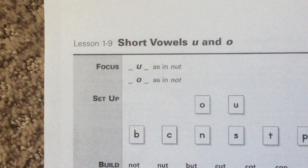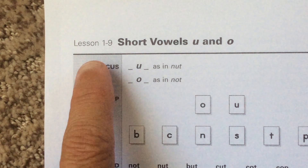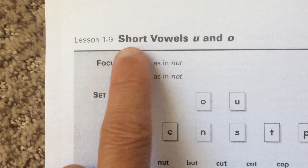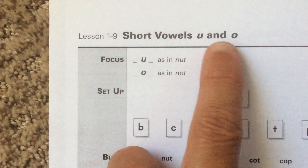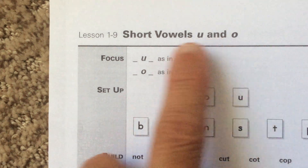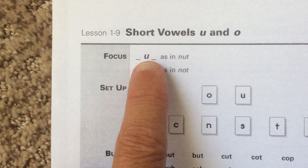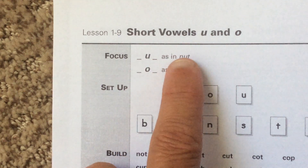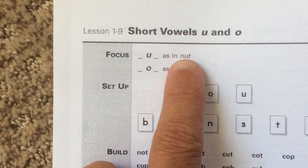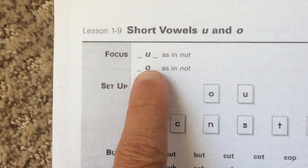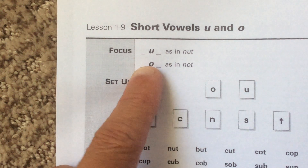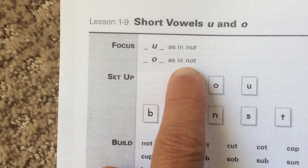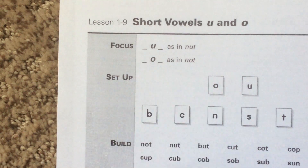Welcome to lesson 1-9 on short vowels U and O. Short U says 'uh' like in the word 'nut.' Short O says 'uh' like in the word 'not.'